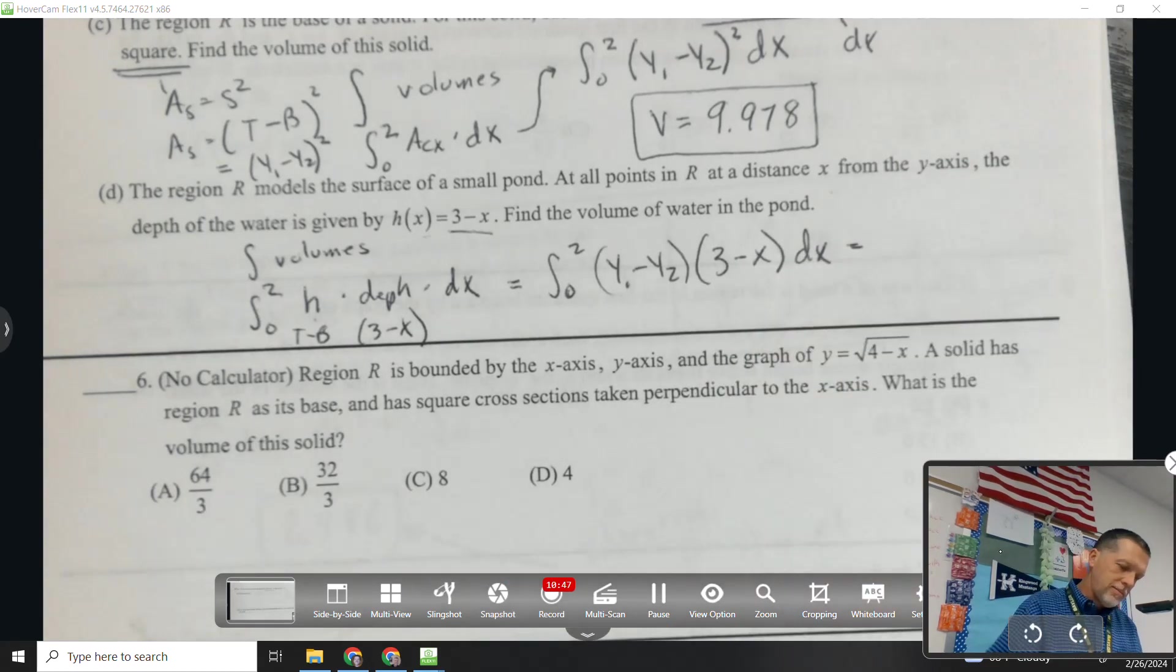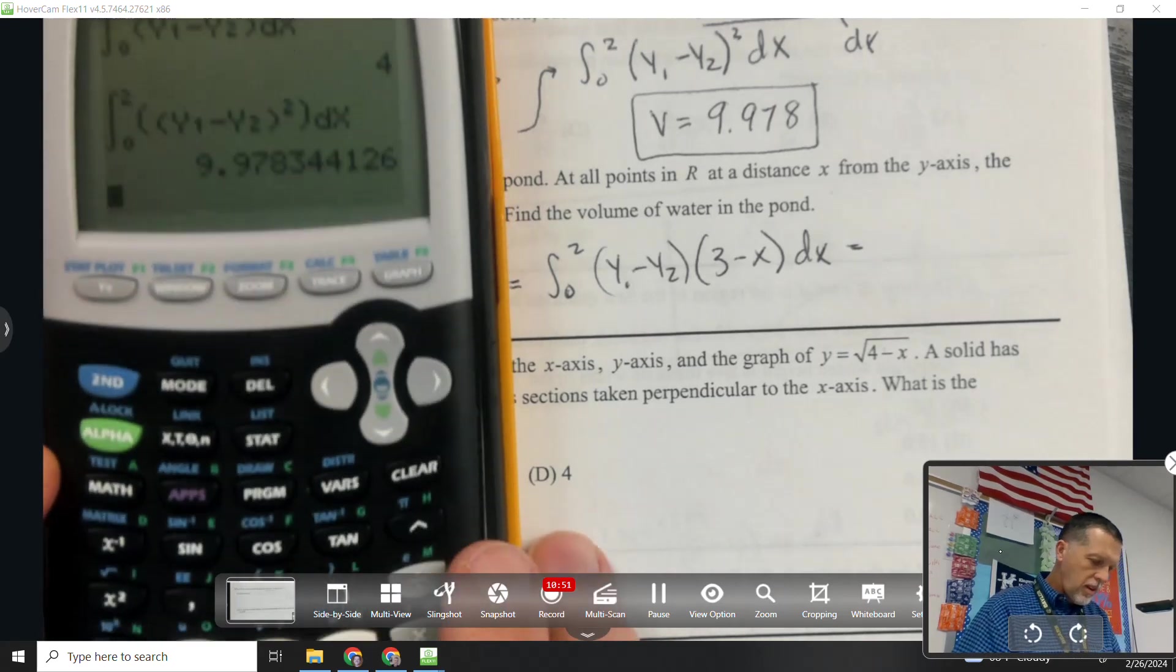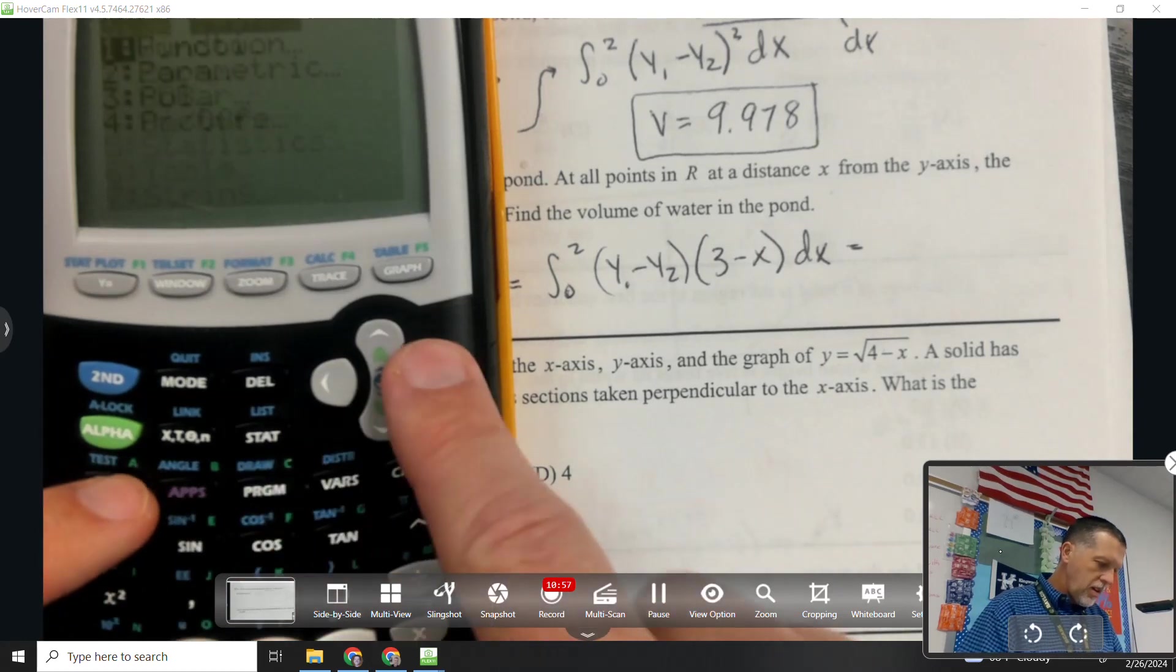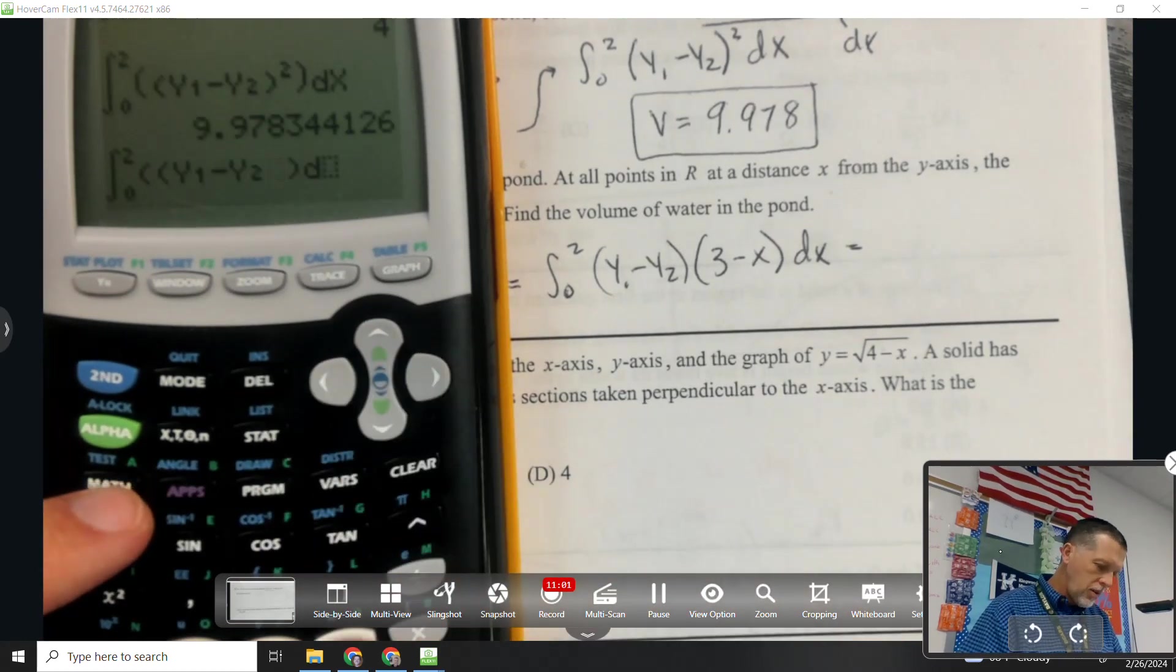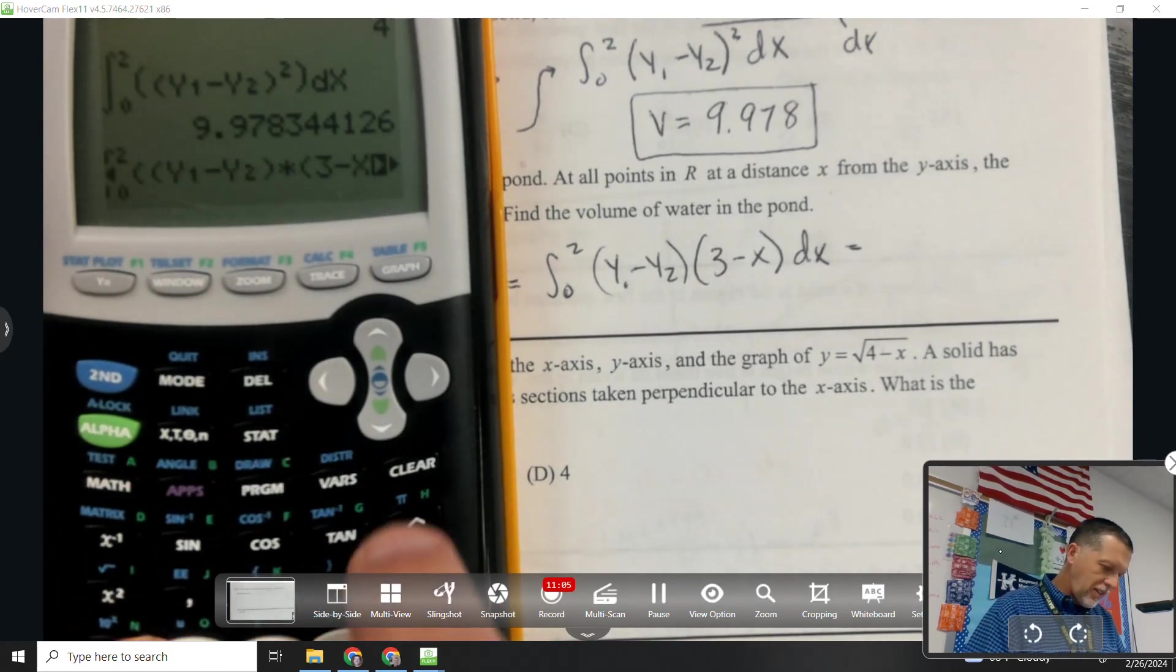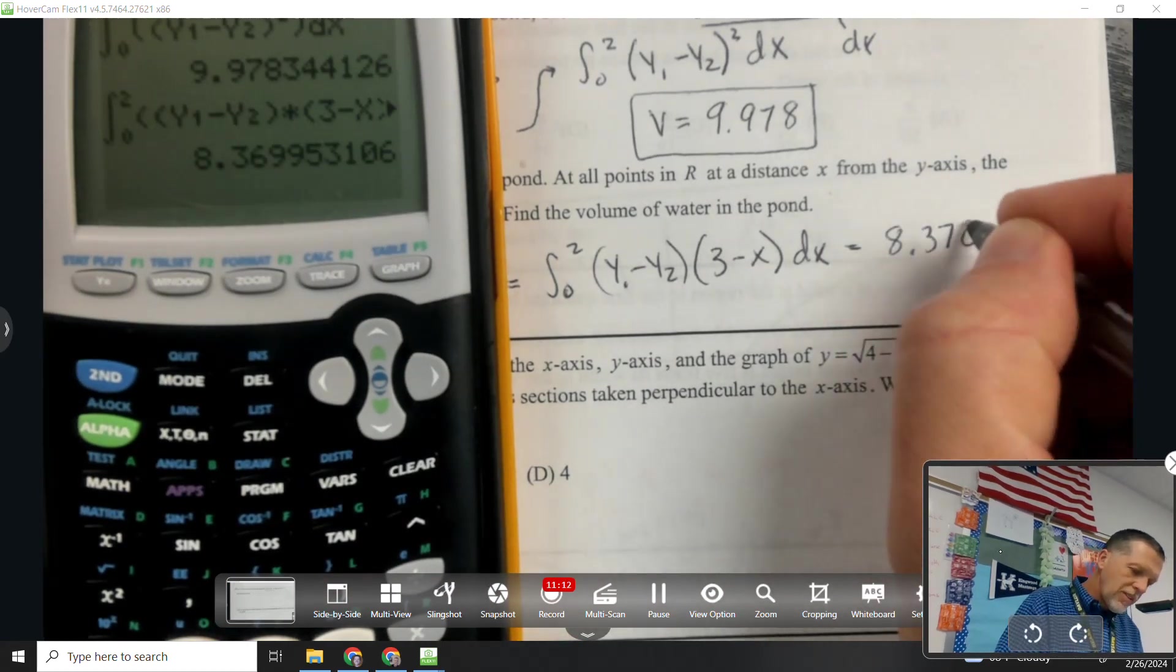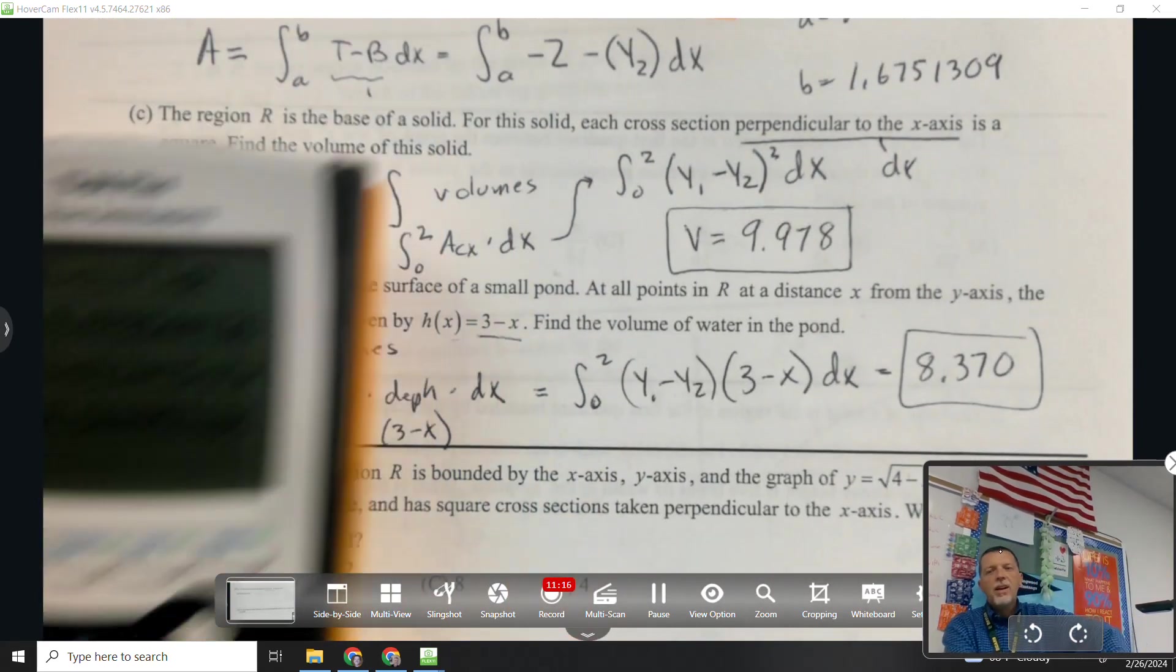So I can type that in the calculator and see what I get. Math 9, 0 to 2, y1 minus y2 times 3 minus x dx. 8.370. That last one was kind of crazy.